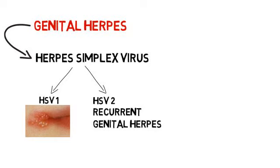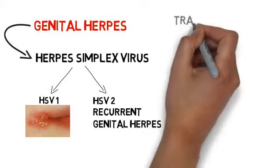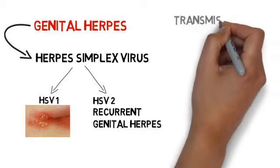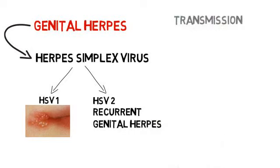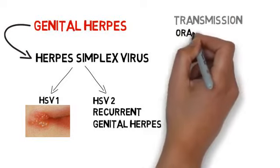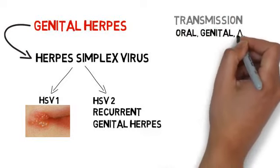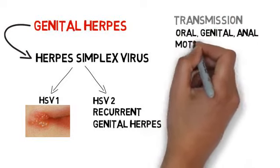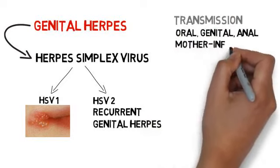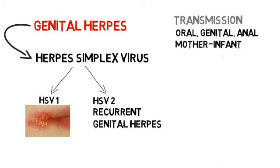In the spine, the virus remains dormant until reactivated. Transmission occurs through intimate genital, oral, or anal contact. An infected mother can transmit the virus to her infant during delivery, resulting in significant fetal mortality and morbidity.